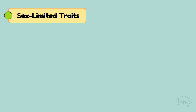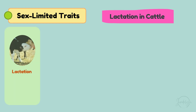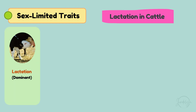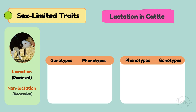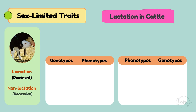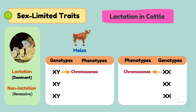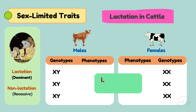A great example is lactation in cattle. Lactation is dominant, while non-lactation is recessive. Let's see this in a table. XY and XX represent the chromosomes of males and females, while the big letter L represents the gene for lactation (dominant), and the small letter l represents non-lactation (recessive).